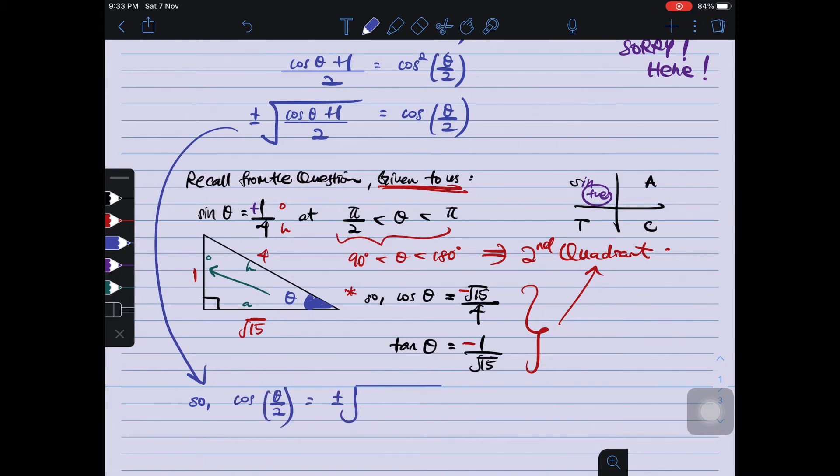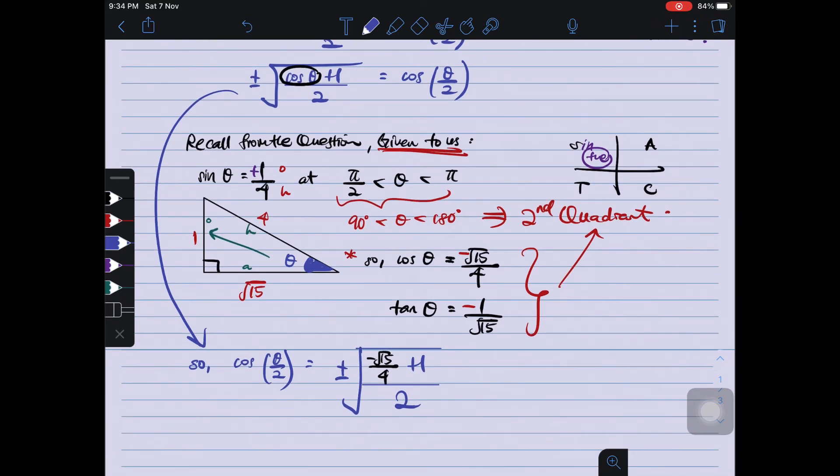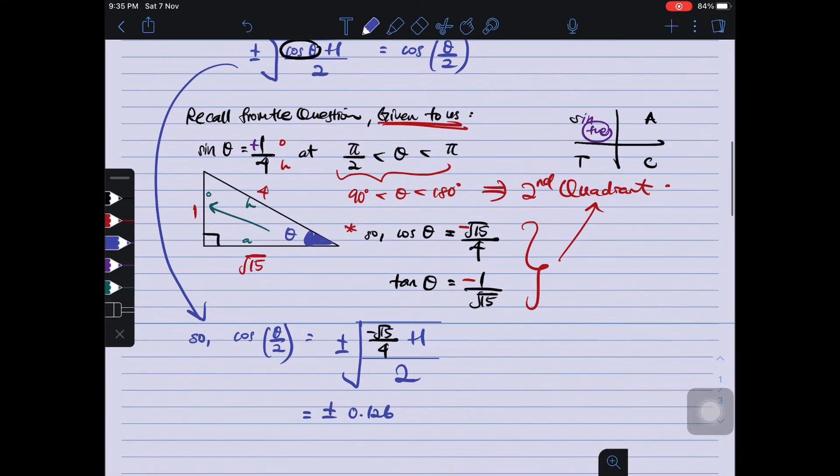So, then we substitute the value of cos θ. Iaitu cos θ is negative √15/4. And then, plus 1 divided by 2. Everything divided by 2. And then you use your calculator. And then you're going to get positive and negative of 0.126.